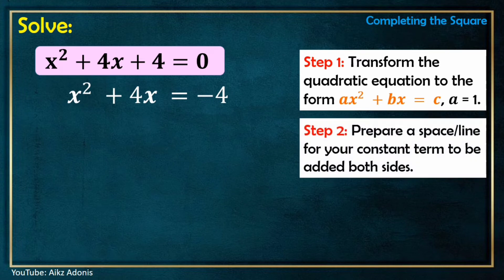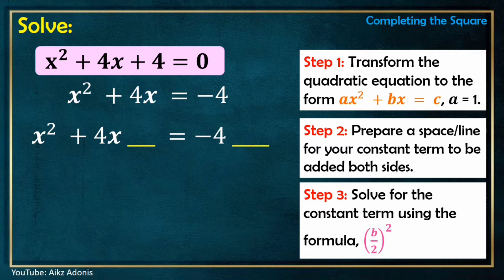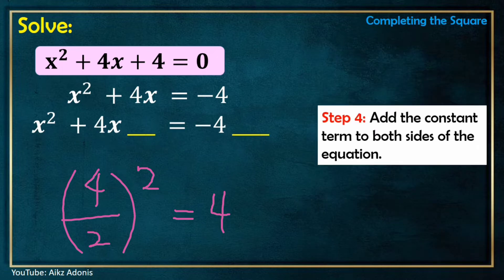Step 2: Prepare a space or line for your constant term to be added to both sides of the equation. Step 3: Solve for the constant term. To find the constant term, we use the formula (b/2)², where b is 4. So 4 divided by 2 is 2, and 2 squared is 4. The constant term is 4.